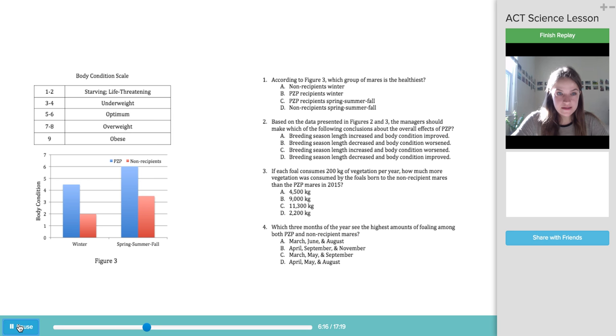And here we look at these charts. Spring, summer, fall, the PZP, that is around six, which would be the healthiest in the body condition scale. So we can skim down all these answers. A, non-recipients in the winter. Non-recipients in the winter are two. That would be starving. That's not the healthiest out of these. PZP-recipients winter, PZP-recipients spring, summer, fall, and non-recipients spring, summer, fall. So as I just said, the largest one here seems to be the PZP-recipients in the spring, summer, fall. Those are the healthiest of six. So here, our answer would be C.